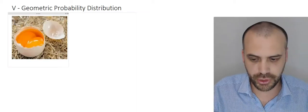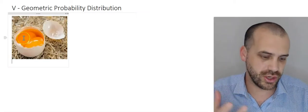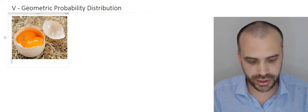Did you know that sometimes when you crack an egg open, you'll find two yolks inside the egg? We call that a double yoker. It's pretty rare.